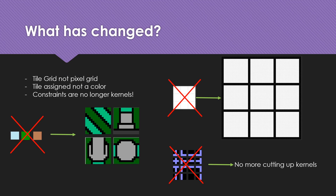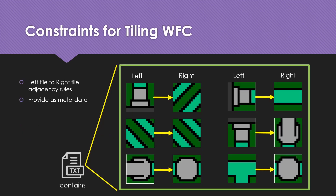We are no longer cutting up kernels. Instead, we are going to handle constraints differently. How constraints work in tiling wave function collapse: each constraint is a left-tile to right-tile relationship, or an adjacency rule between two tiles. These tiles can also be oriented and rotated, and we provide all of these constraints in the form of metadata to the algorithm.